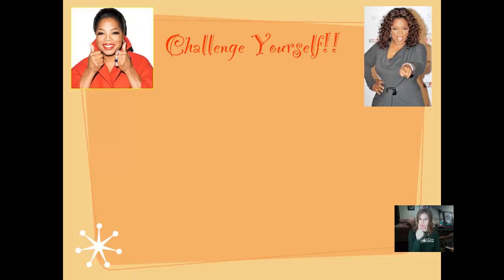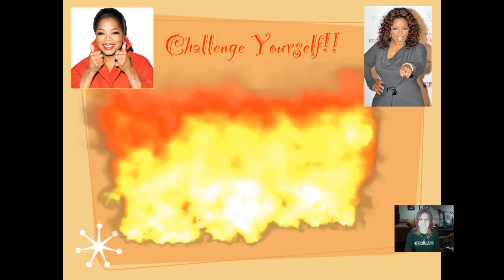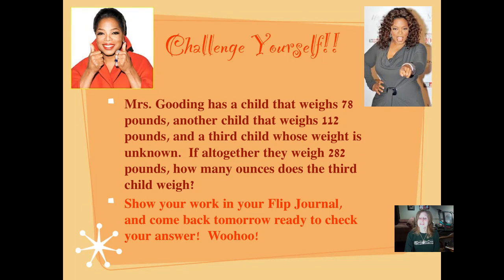It's time for you to challenge yourself. Mrs. Gooding has a child that weighs 78 pounds, another child that weighs 112 pounds, and a third child whose weight is unknown. If altogether they weigh 282 pounds, how many ounces does the third child weigh? Show your work in your flip journal and come back tomorrow ready to check your answer.